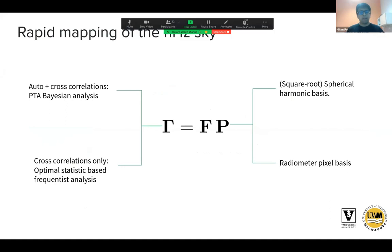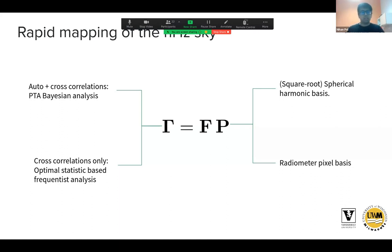For analyses including both auto and cross correlations, we use full PTA Bayesian pipelines. However, these are very slow and time-consuming. For more rapid inferences on anisotropy, and to inform the Bayesian analyses, we also looked at cross-correlation-only analyses using the optimal statistic framework in the NANOGrav pipeline. These results can be turned around within a couple of weeks, whereas the full PTA Bayesian analysis can take weeks just to burn in and collect enough MCMC samples.